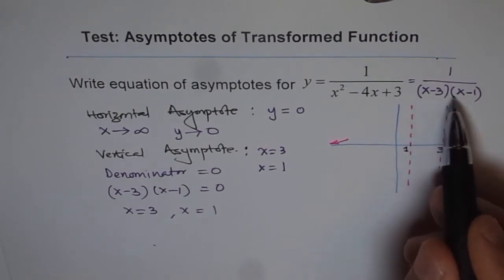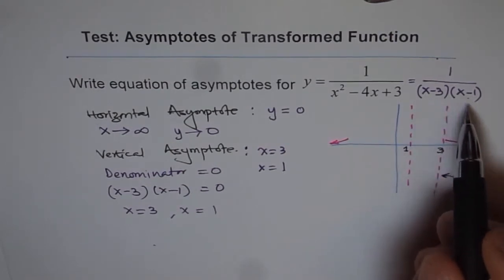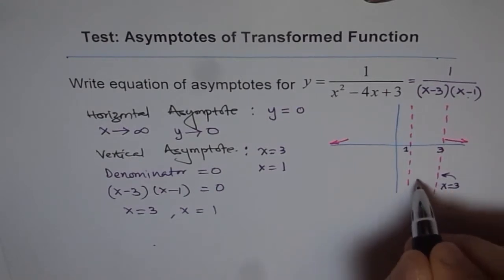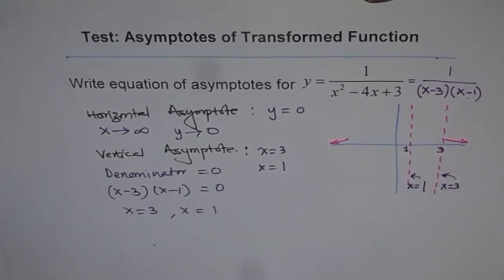That's how we get vertical asymptotes. Remember, a vertical asymptote is a value that makes the denominator 0. These are vertical lines with equations x equals 3 and x equals 1.